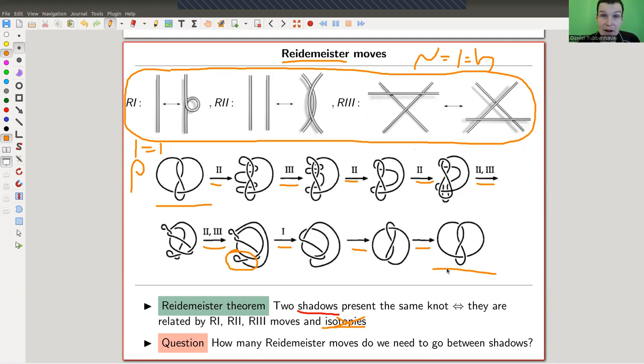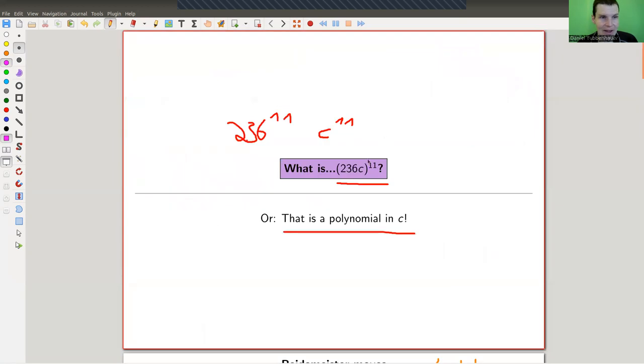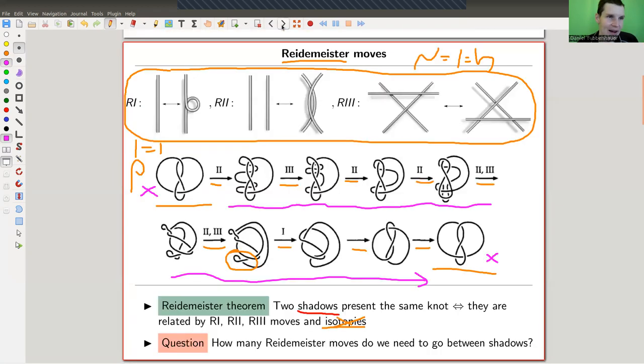But which is not answered by the Reidemeister theorem, which is kind of the question for today, is how many Reidemeister moves do we actually need? So let's say we fix this shadow, and we know that we want to go to this shadow. There should be some way of getting hold of the number of necessary moves to go from one side to the other. Turns out that this is a really, really hard question. So we need to definitely restrict to a simpler subclass of questions. And it's still very, very, very hard. In the end, it will be this number. Spoiler, spoiler.